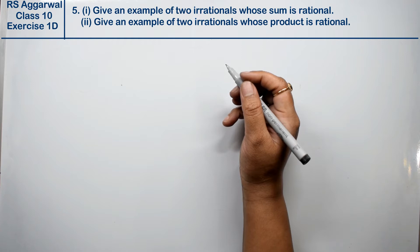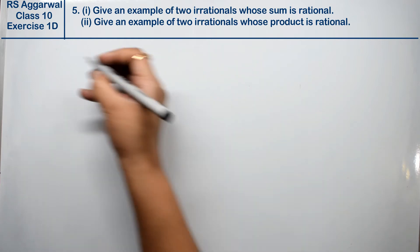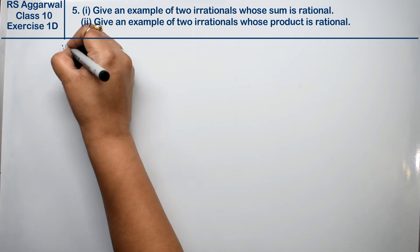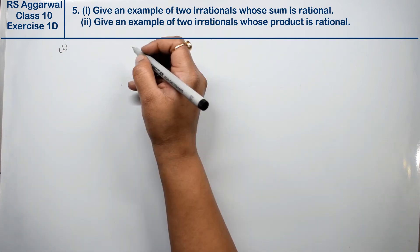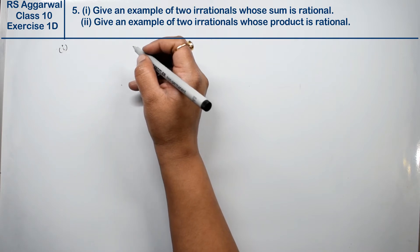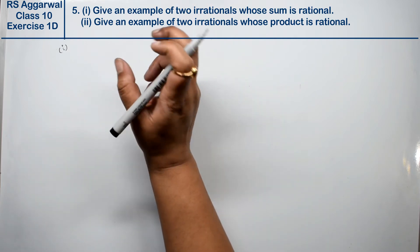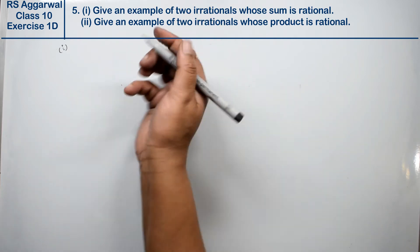Let's do question number 5 of exercise 1D on real numbers. The first part asks: give an example of two irrational numbers whose sum is rational. We need to find two irrational numbers whose sum gives a rational answer.